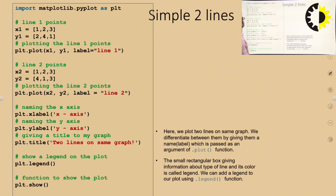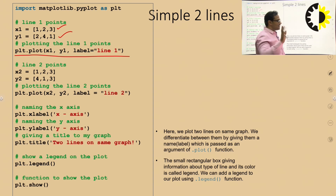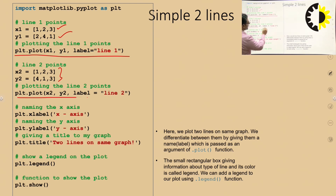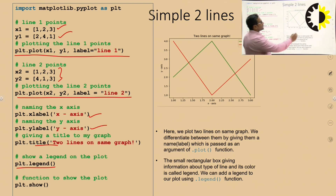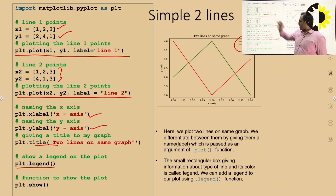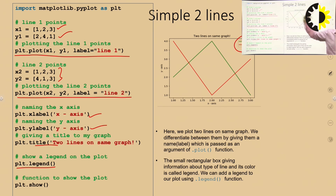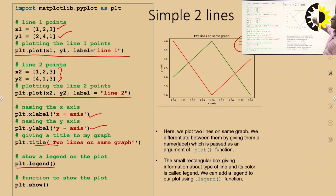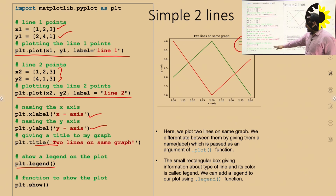If you need two lines in a graph, you need x1, y1 and x2, y2. Draw the first plot with label 'line 1' and the second plot with label 'line 2'. Set xlabel, ylabel, and title. Call plt.legend() - legend basically shows whatever labels you gave when creating the graph. Line 1 is a green color line representing data from x1 and y1. The legend shows which line corresponds to which data. Finally, call plt.show().